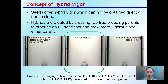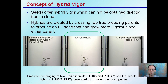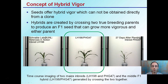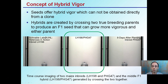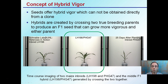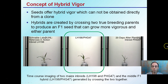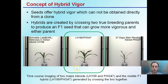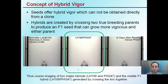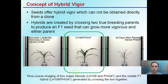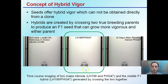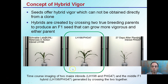What does this look like in real life? Here's a nice example showing seeds offering hybrid vigor, which cannot be obtained directly from a clone. Hybrids are created by crossing two true-breeding parents to produce F1 seeds that grow more vigorously than either parent. We see parent one on one side, parent two on the other — both corn plants — and the hybrid in the middle. As we go through this time-lapse showing the progression, you can see this hybrid plant tends to produce bigger and better than either of the lines used to breed it.